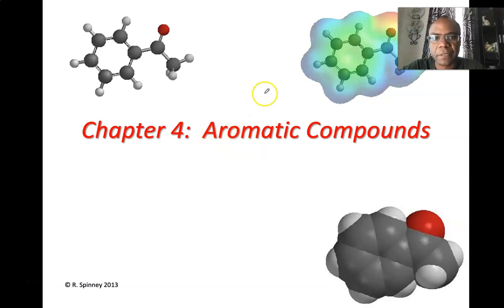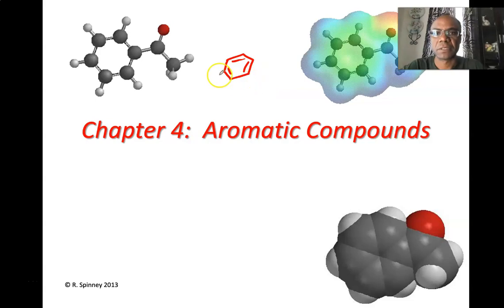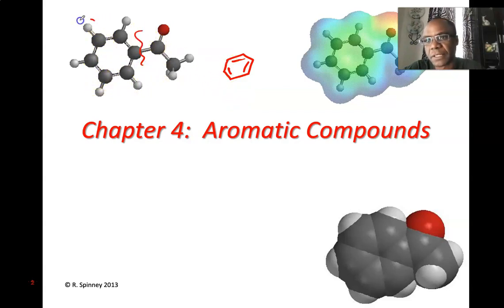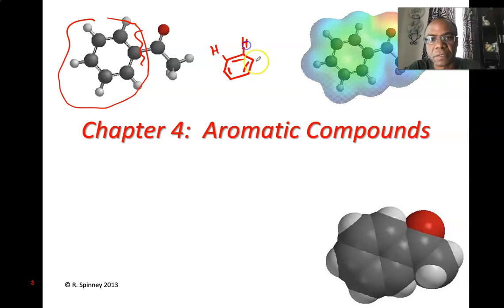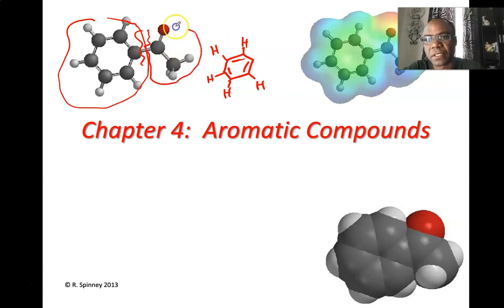In this chapter we'll talk about aromatic compounds. The basic aromatic compound is going to be benzene. Because this is a survey class, we will not go deep into many aromatic compounds. So we're just going to describe how this benzene ring would react. Each carbon must have four bonds, so where bonds are not shown, there's a hydrogen. The hydrogen is missing here because it was replaced by this ketone group.